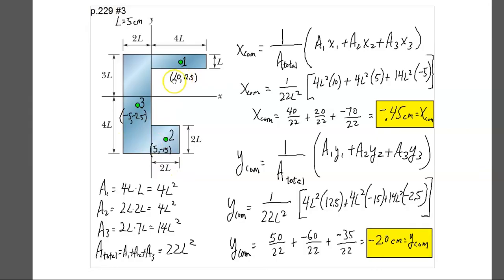So the first one had an area of 4L squared. So 4L squared times 10. The second had an area of 4L squared times its X position of 5. And the third had an area of 14L squared times its X position of negative 5. Then I see the L squareds cancel out. So I didn't have to plug 5 in there. I just saved myself a little work. By keeping the L squared there, it canceled out of the equation.